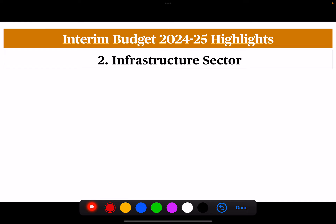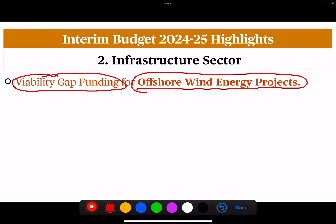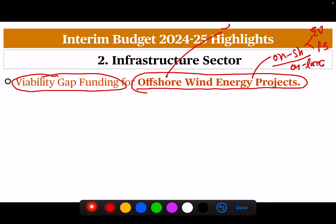The next sector is infrastructure. The government is planning to provide viability gap funding for offshore wind energy projects. Most wind energy projects are onshore — on land — which are economically viable and financially stable. But offshore wind energy projects, though economically viable, are not financially stable. So the government will provide viability gap funding, that is grants, to the private sector so that offshore projects can also become financially stable.